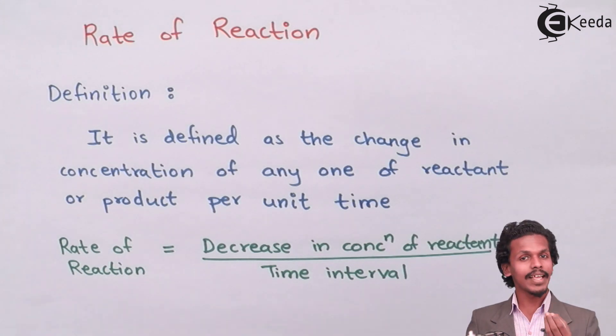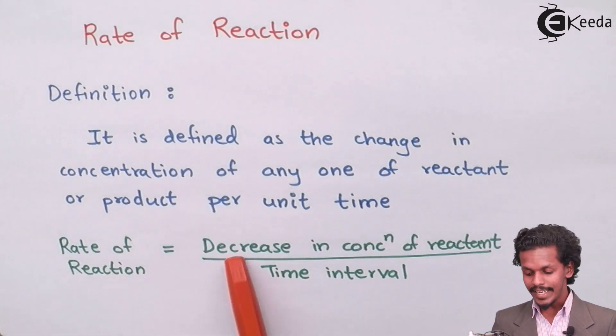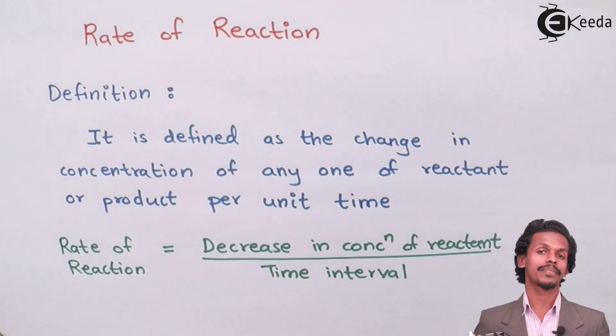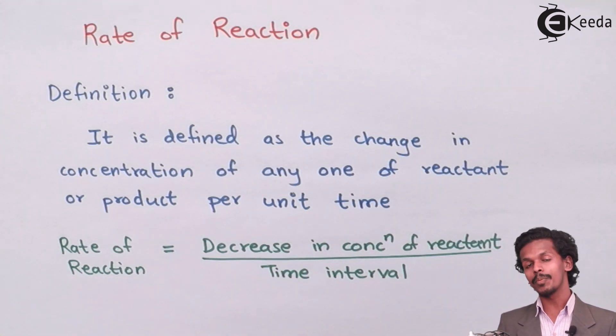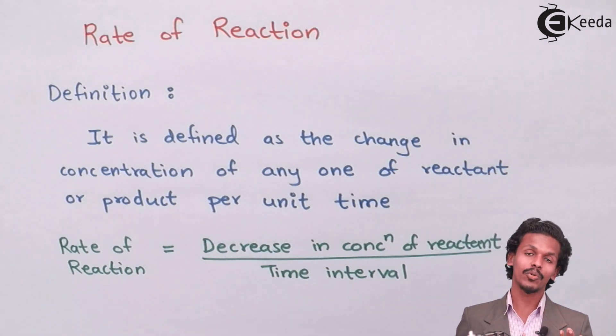So let us see an example of it. The rate of reaction is the decrease in concentration of reactant with respect to time, and for product, it would be increase in the concentration of product with respect to time.